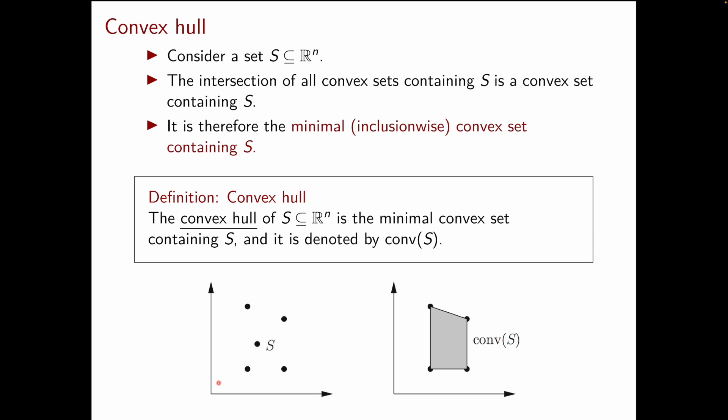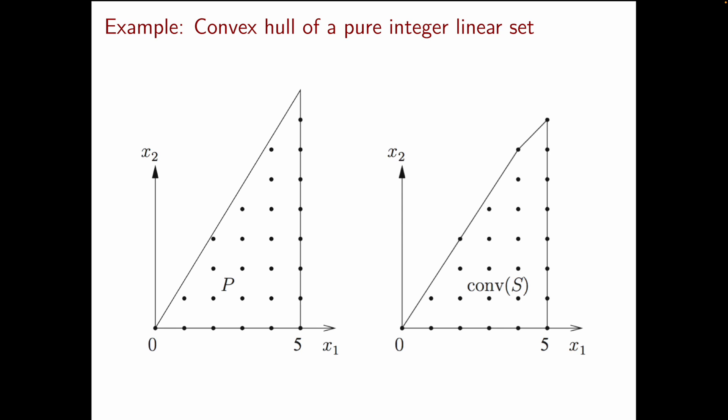We have an example here. On the left we have a set of five points S, and on the right we have the corresponding convex hull of S.